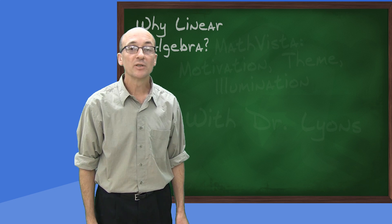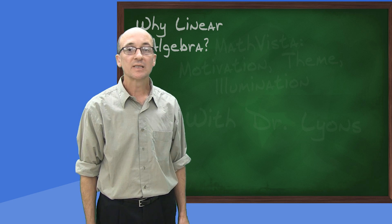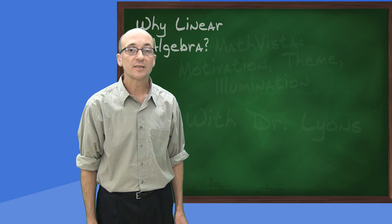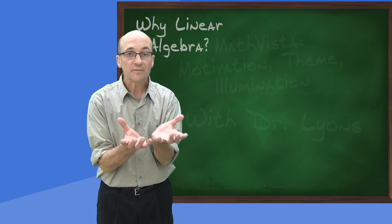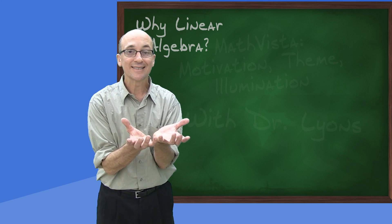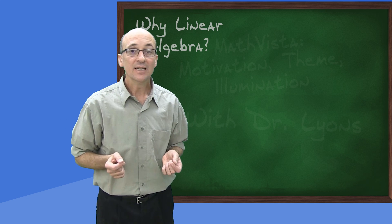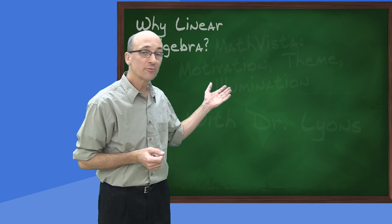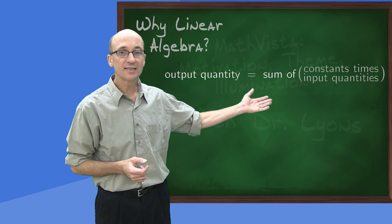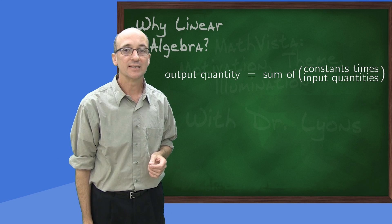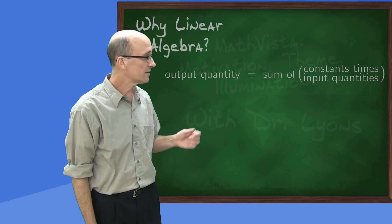Among all functions with multiple inputs and multiple outputs, the simplest ones are the ones that require just two operations, multiplication of input variables by constants and addition. These have the form output quantity equals a sum of constants times the input quantities. In symbols, it looks like this.